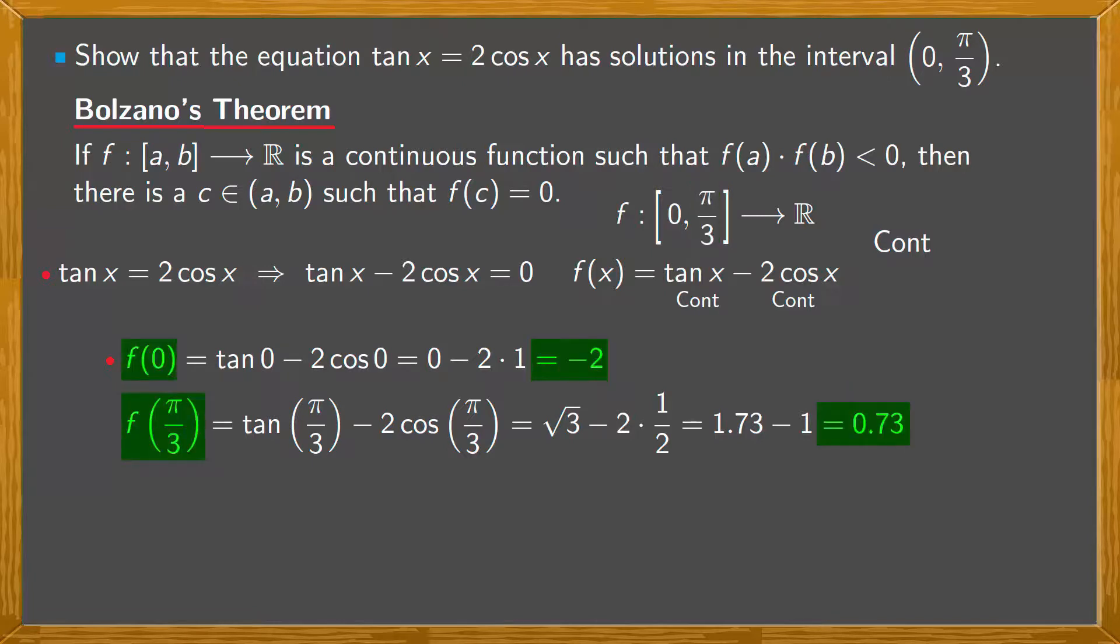Notice that f(0) is negative. f(π/3) is positive, so they have different signs. All the conditions of Bolzano's theorem are fulfilled. f is continuous in the closed interval [0, π/3], and the images at the ends have different signs. Consequently, there exists c belonging to the open interval (0, π/3), such that f(c) equals 0.